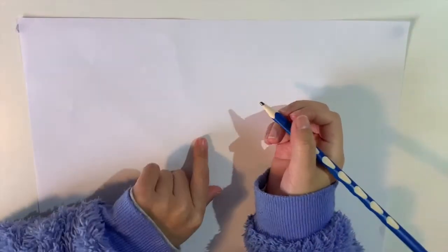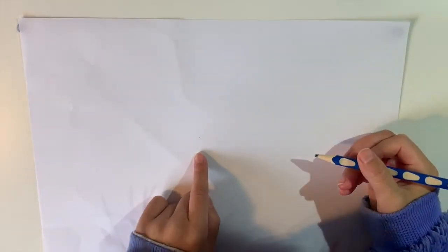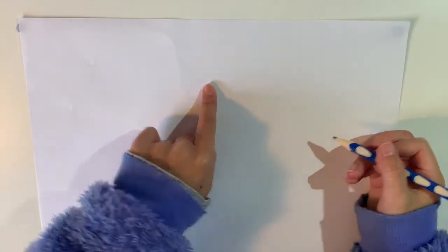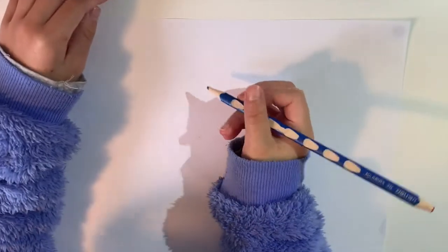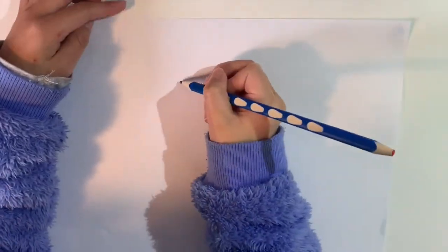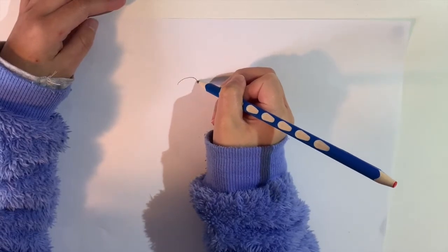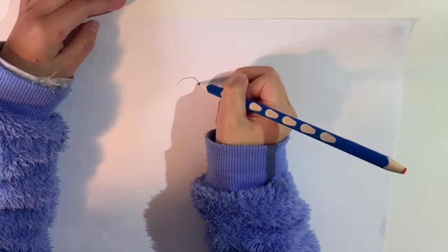So first of all, we'll be drawing the head. You need to find the middle spot, take a dot, and then use the dot to move a bit further up. Now when you have done that, draw a little half circle for the head.